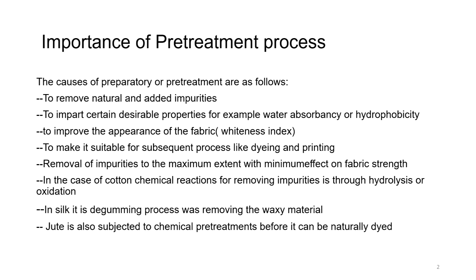In the case of cotton, chemical reactions for removing impurities are through hydrolysis or oxidation. In silk, we have to do a de-gumming process for removing the waxy material. In jute, it is subjected to chemical pre-treatment before it can be naturally dyed.